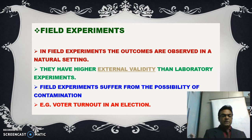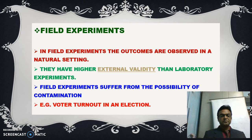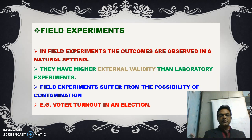The third type of experiment is the field experiment. In field experiments, the outcomes are observed in a natural setting. They have higher external validity than laboratory experiments, but generally suffer from the possibility of contamination. One of the best examples is voter turnout in an election — if we want to know how many voters cast their vote during an election, we can use this type of field experiment.